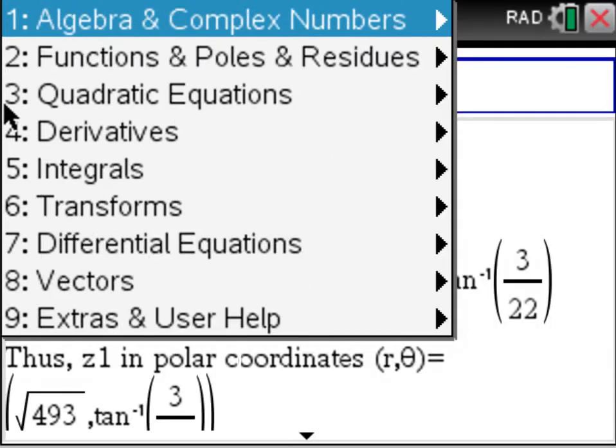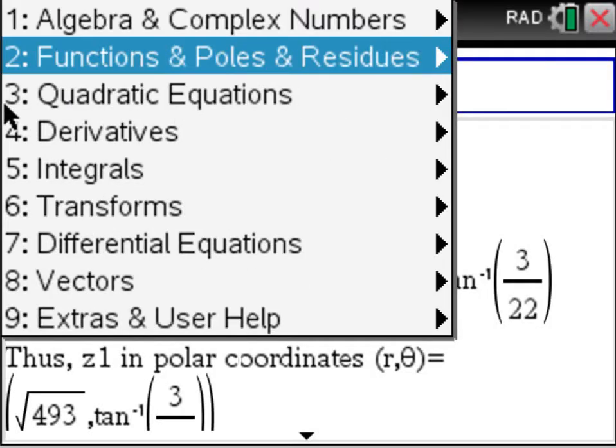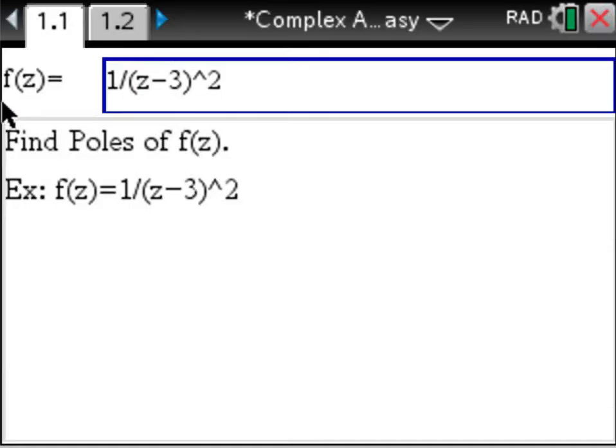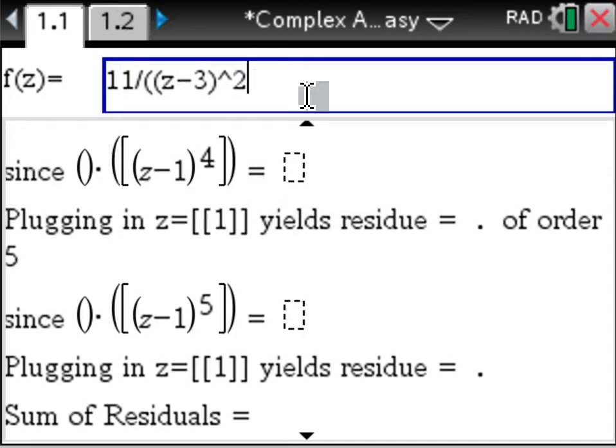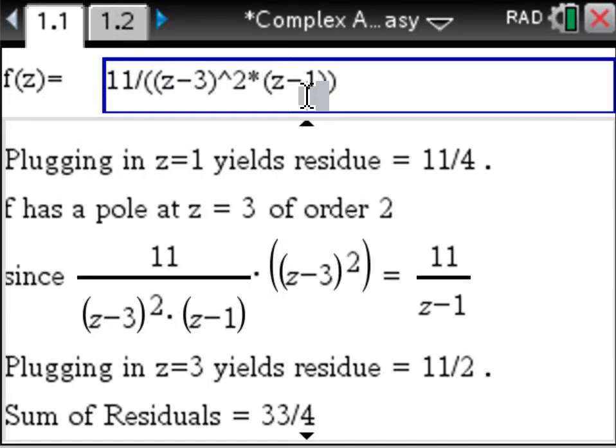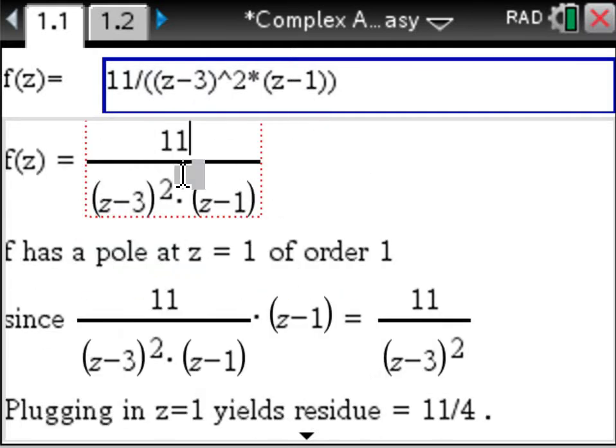Let's look at further functionality. Let's find some poles. Let's say we alter the pre-given function and analyze a function with two different poles at 3 and at 1.